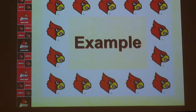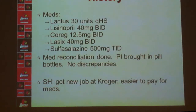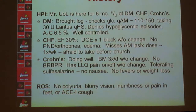Let's do an example. Mr. UofL is here for a six-month follow-up of diabetes, heart failure, and Crohn's disease — as an established patient. For diabetes, you assess their home sugars, what they're taking, any side effects like hypoglycemia, and today's A1C. I've decided this patient's diabetes is well-controlled.